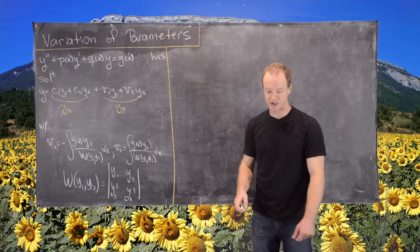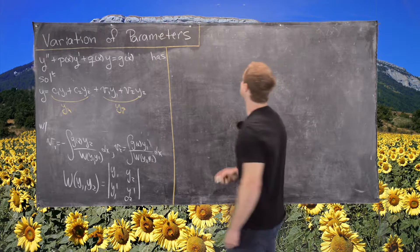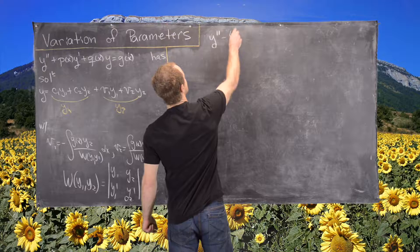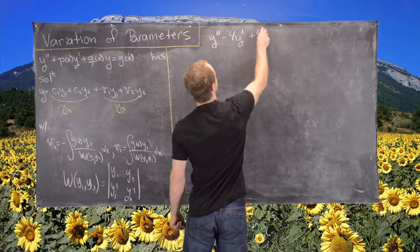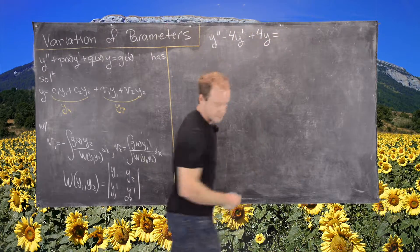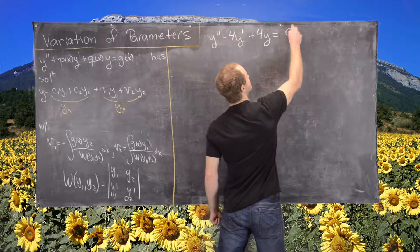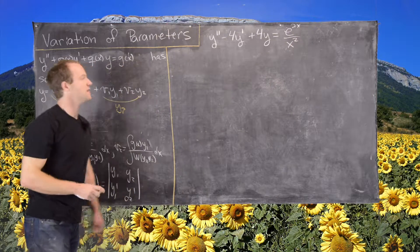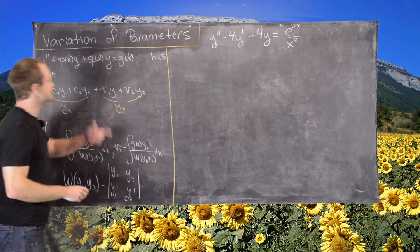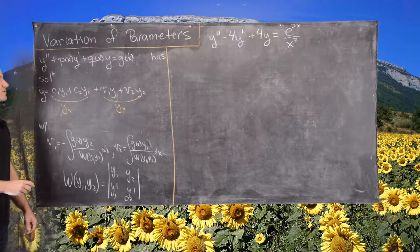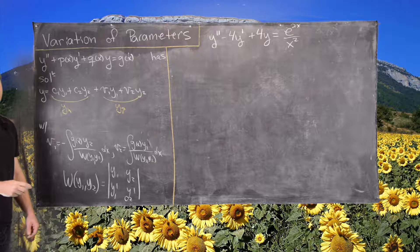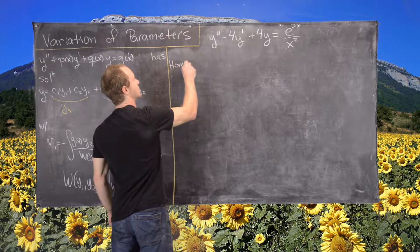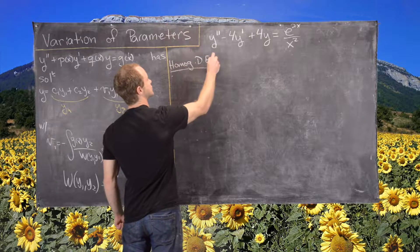That's the general strategy. Now let's look at it with a particular example: y double prime minus 4y prime plus 4y equals e to the 2x over x squared. As you can see from the solution strategy, finding a solution to the corresponding homogeneous differential equation is very important, so let's do that.